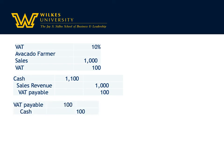When the avocado farmer pays the government, they debit VAT payable and credit cash for $100, so the liability is gone. That part is very similar to the sales tax.